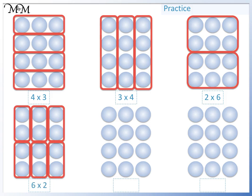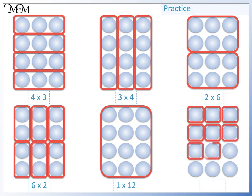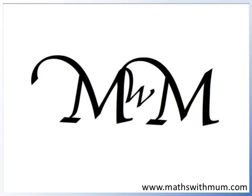We could have 1 large group of 12, which we can write as 1 times 12. Or finally, we can have groups of 1. As we know that there are 12 counters in total, we know that there must be 12 groups of 1. We can write this as 12 times 1. Thank you for watching.